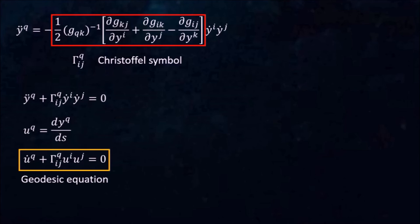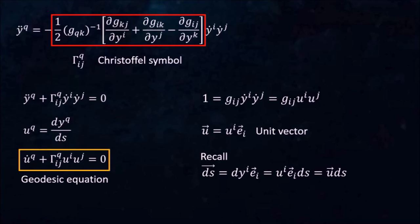This is called the geodesic equation. The vector u is a unit vector tangent to the geodesic. How can we verify this? Well, we've already seen that this identity is true. Hence, the vector u has a unit length. Recall the infinitesimal distance vector ds, which is equivalent to this, and also this. Since the length ds is just a scaling factor, u must be pointing in the same direction as ds. Hence, it is tangent to the geodesic.